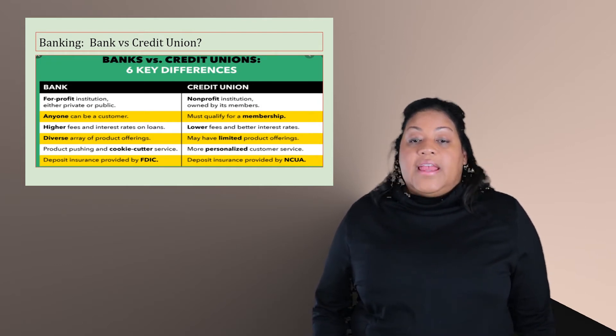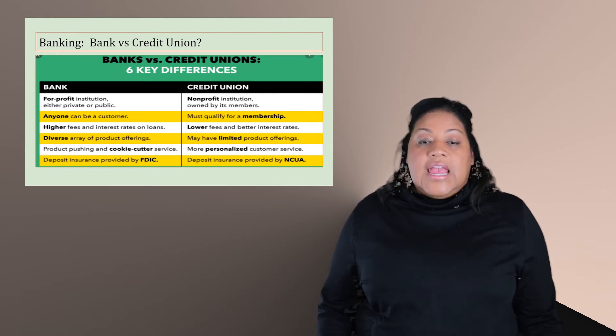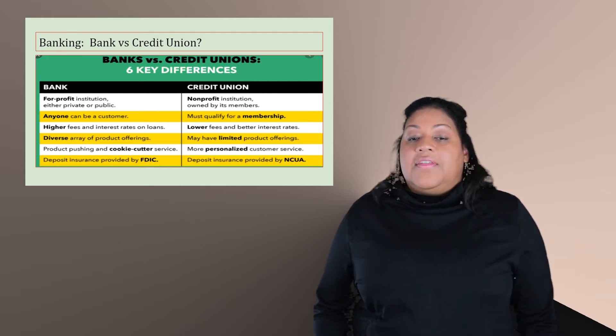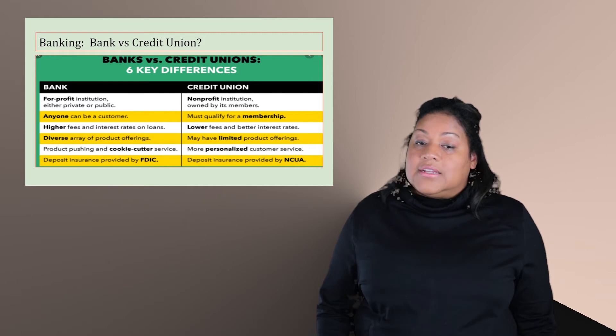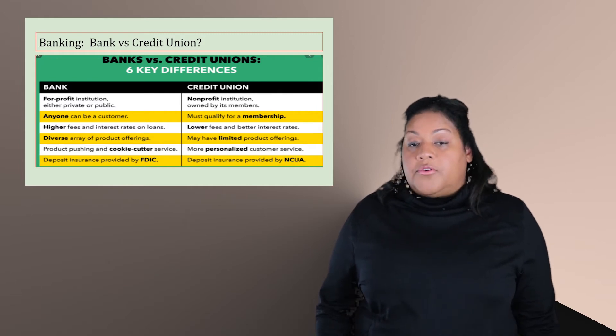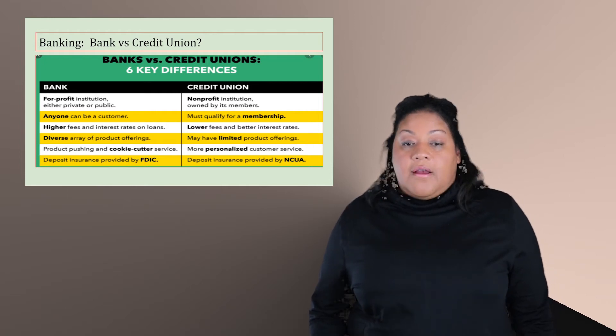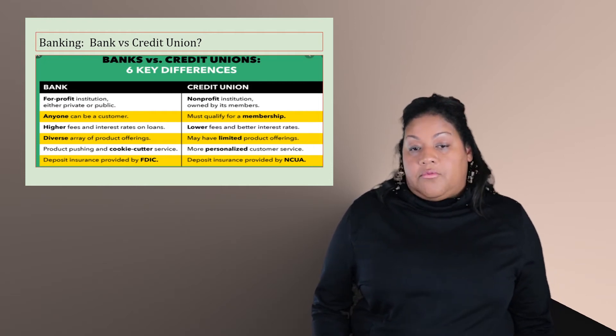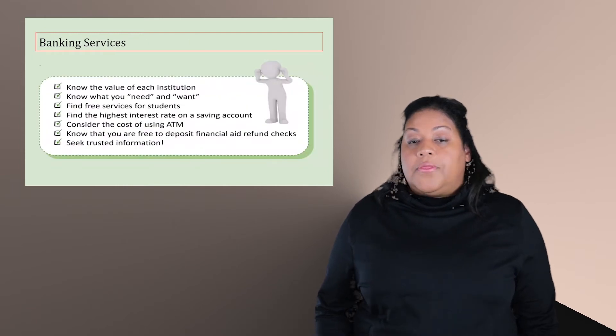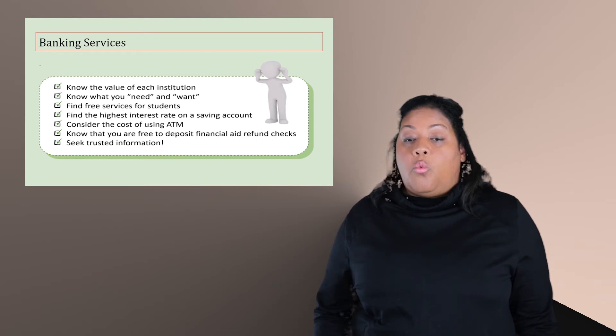As you can see on this slide, banks are typically more for profit. Anyone can become a member. They tend to have higher interest rates, but also offer more diverse products at your banking. A lot of times with credit unions, it's not-for-profit and also you can get better rates. Whether you go with a bank or a credit union, the most important thing to do is consider what services that you need. Different situations and needs call for various types of accounts.